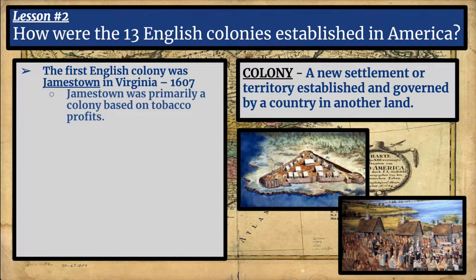Jamestown was primarily a colony based on the profits from tobacco. It did not start off that way — it started off as a complete disaster, with the majority of colonists dying and in some cases resorting to eating their own. But it was eventually saved by tobacco and did become successful. In fact, you can trace the worldwide smoking epidemic in some ways back to Jamestown, because the Native Americans introduced tobacco to the Jamestown colonists and they became rather rich.